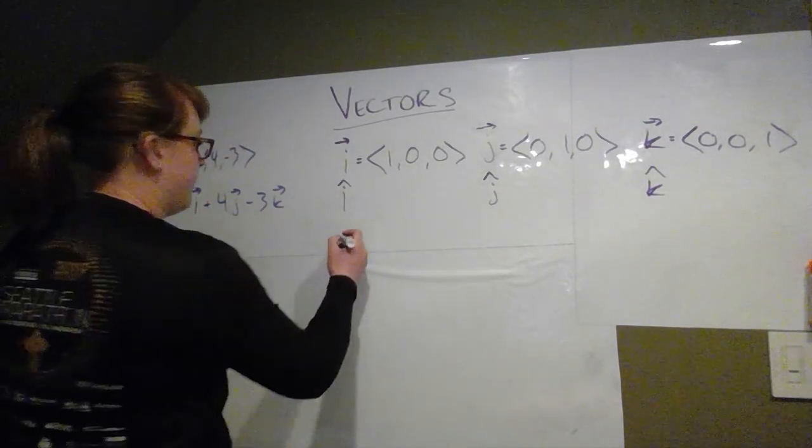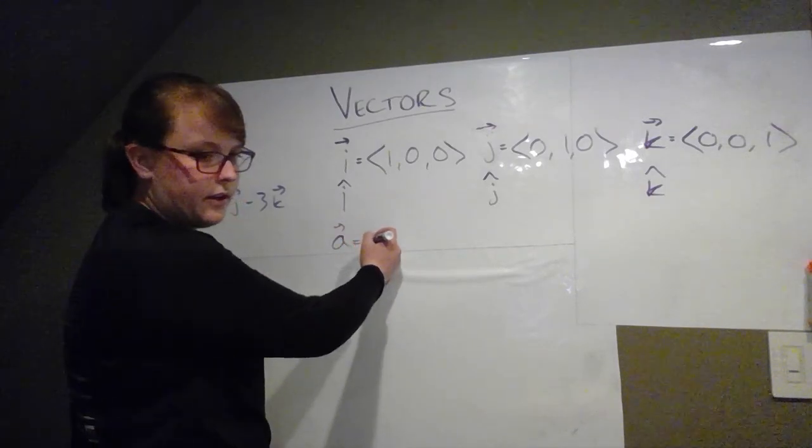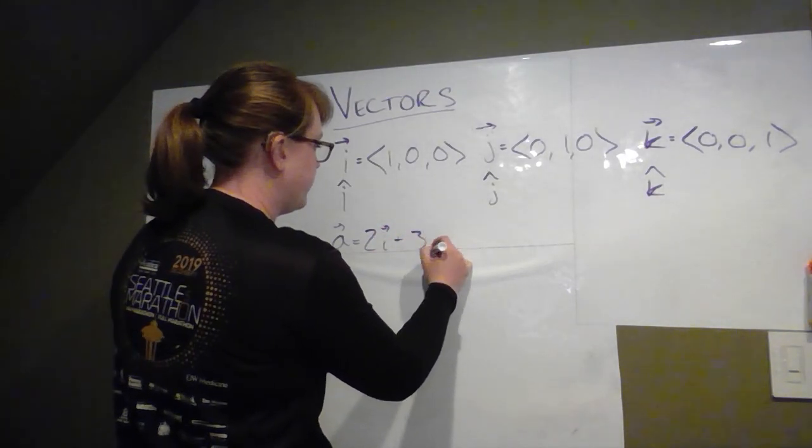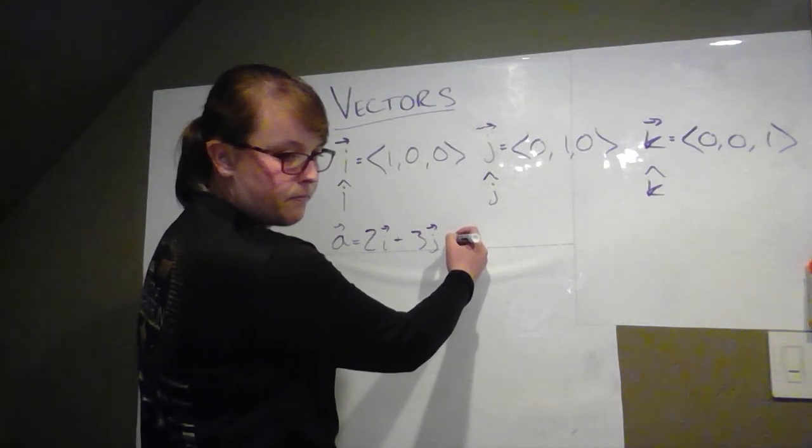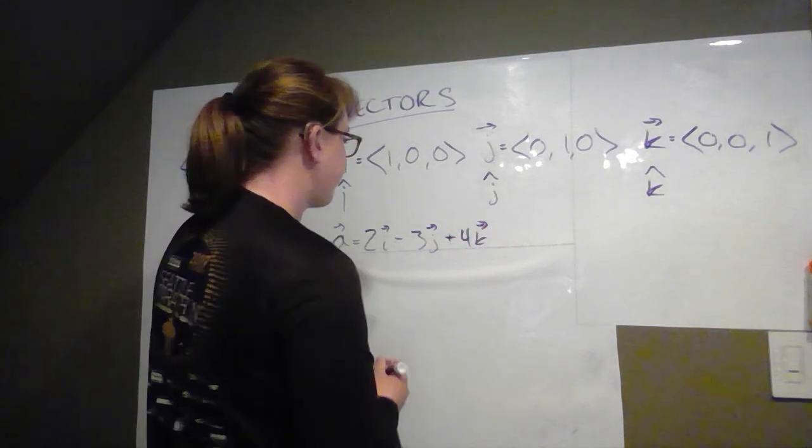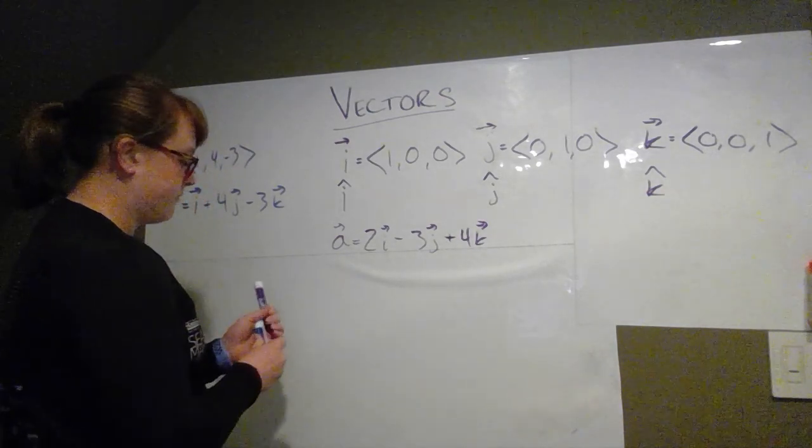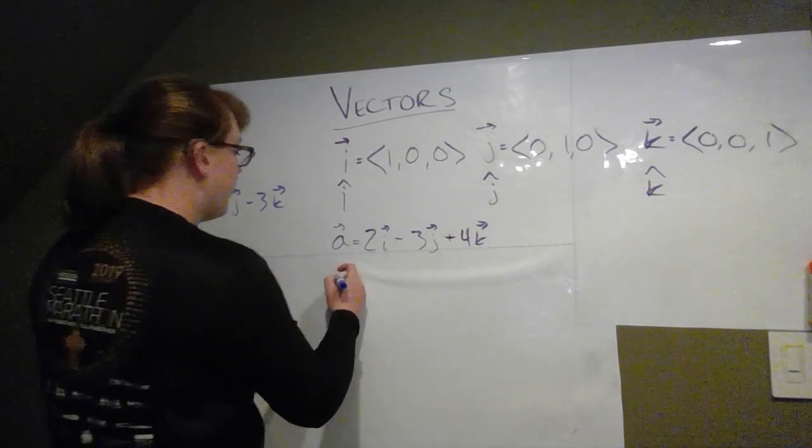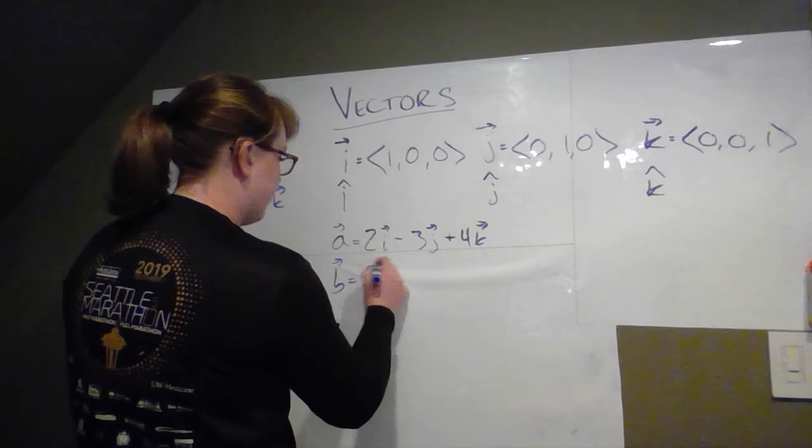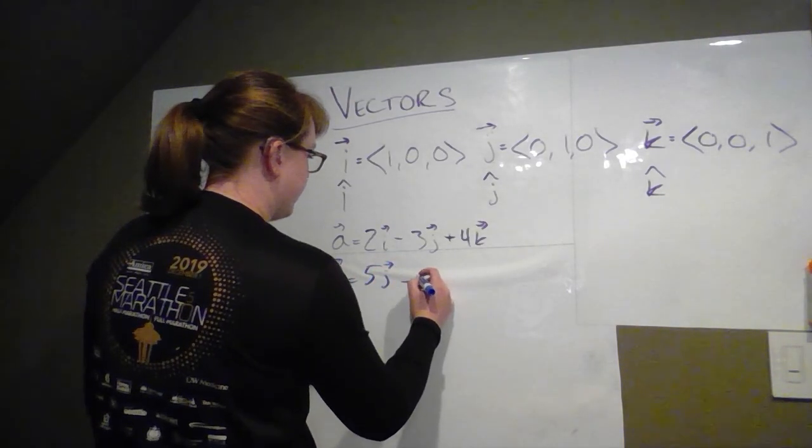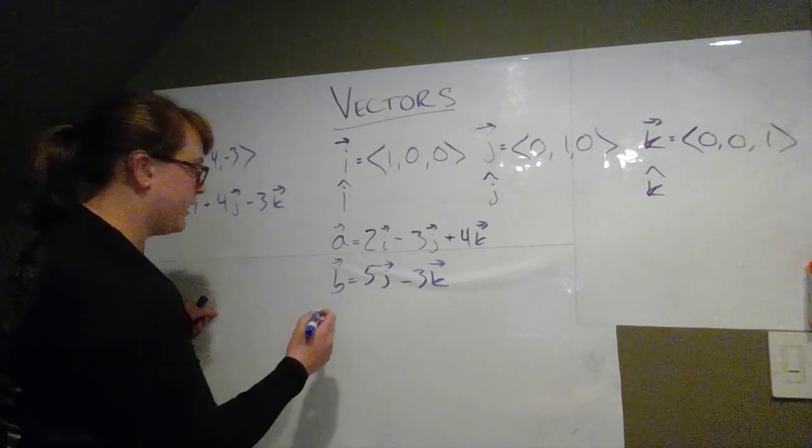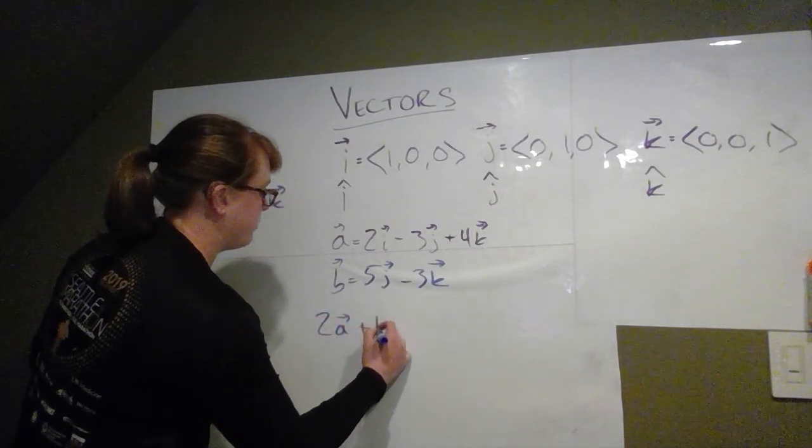So, for example, if vector a is 2i minus 3j plus 4k and vector b, get marker all over myself, vector b we'll say is 5j minus 3k. So we might be asked something like, what is 2a plus b?